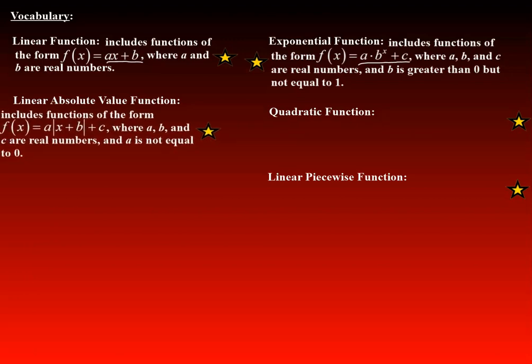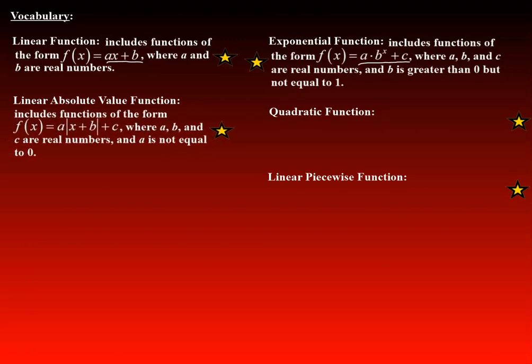Linear absolute value functions include functions of the form f(x) = a|x + b| + c, where a, b, and c are real numbers, and a is not equal to 0.